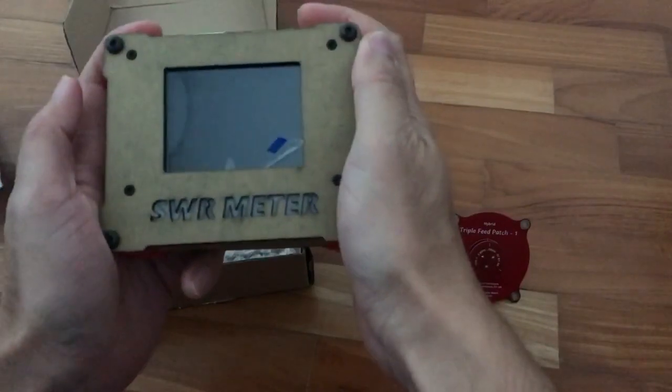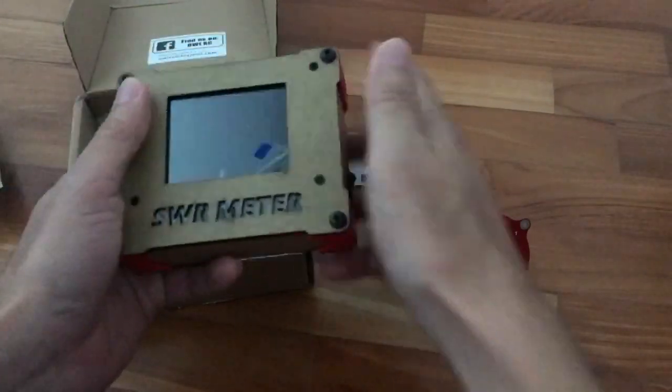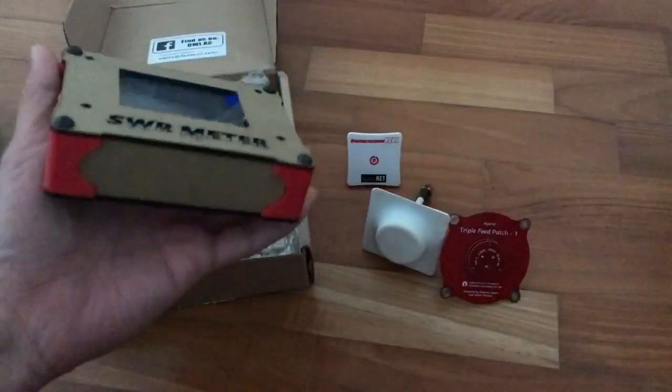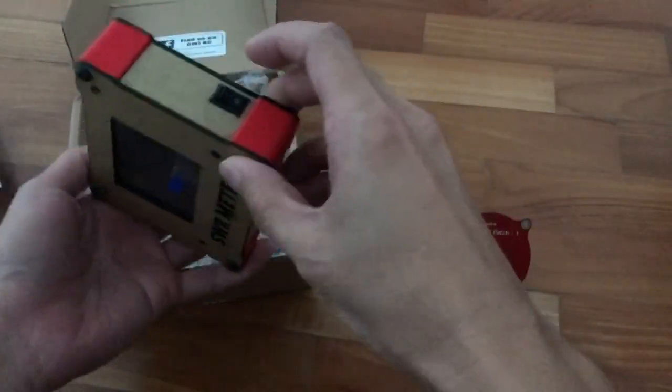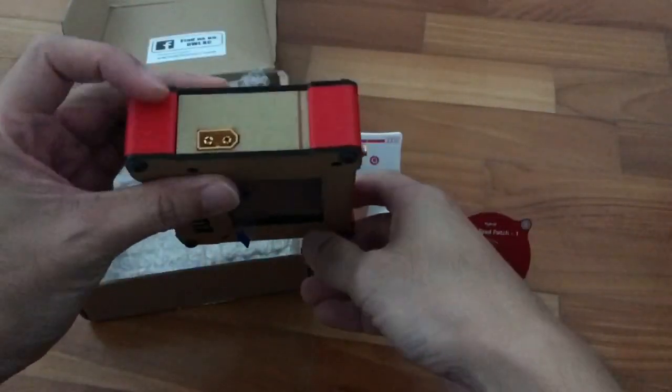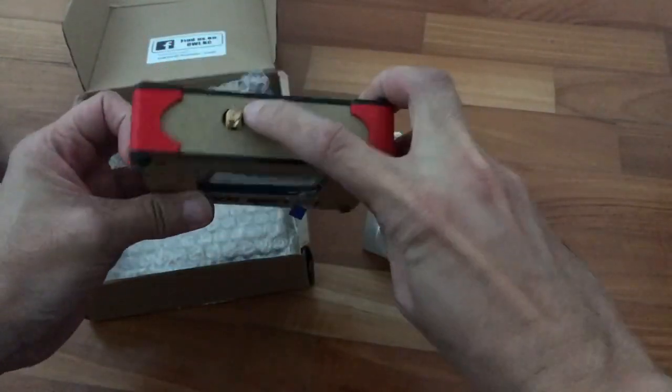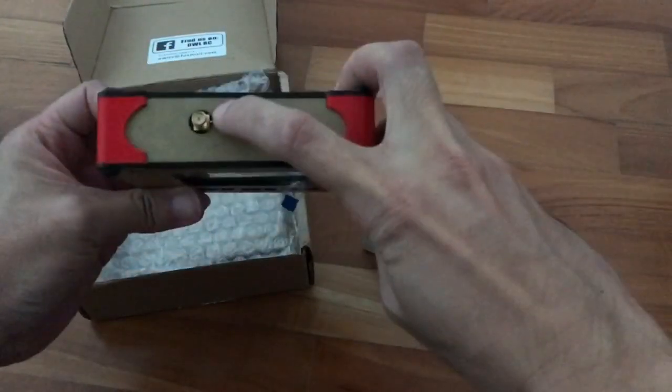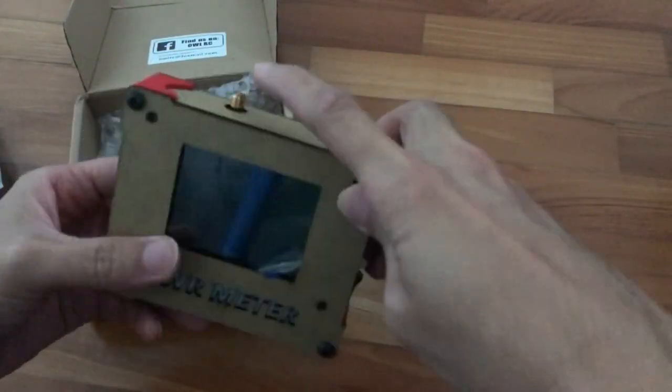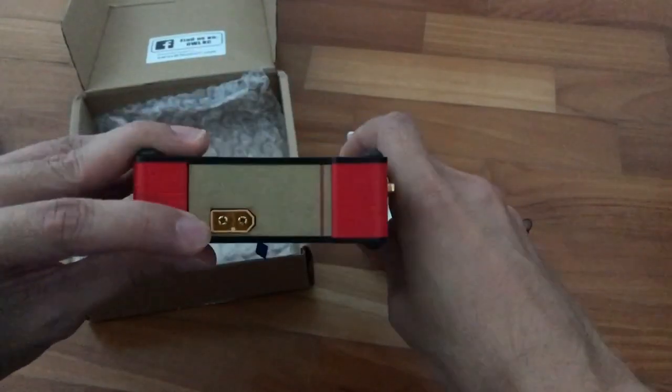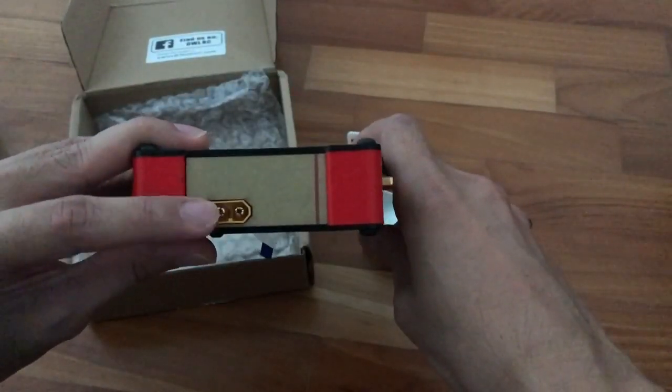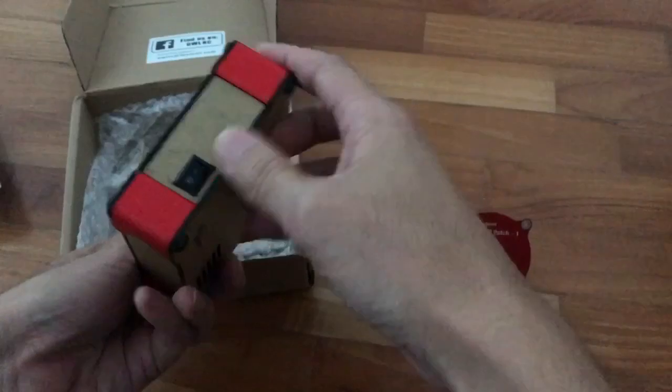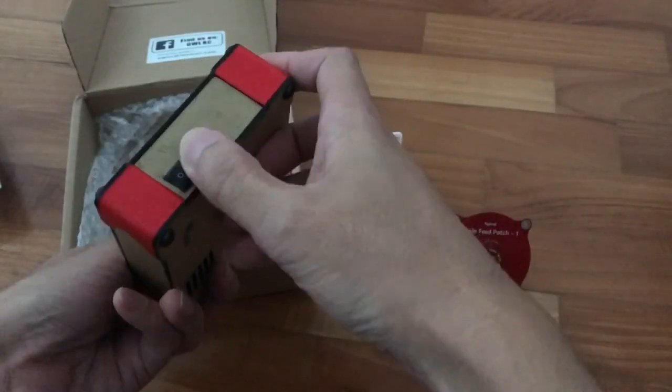This is the SWR meter and it fits nicely in my palm. There's only one outlet here, which is RPSMA. I've got the RPSMA one. And this is the port for you to connect the 3S lipo pack and power on and off switch.